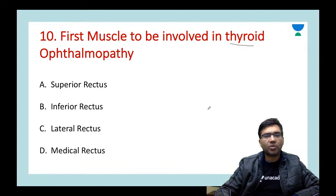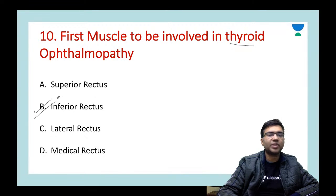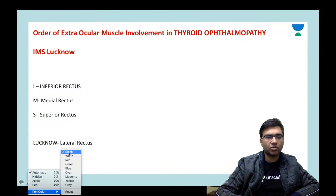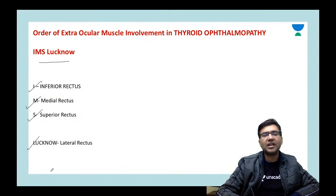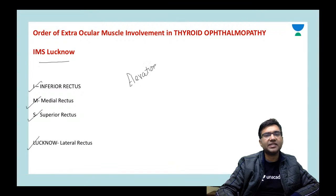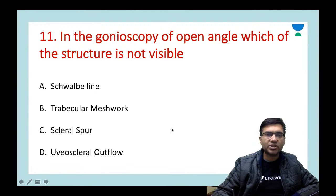Next question: which is the first muscle to be involved in thyroid ophthalmopathy? Options: superior, inferior, lateral, or medial rectus. Remember the rectus muscles are affected first and the first one is inferior rectus. Use the mnemonic 'IMS Lucknow': I = inferior rectus (first), M = medial rectus, S = superior rectus, and the last is lateral rectus. The first action hampered is elevation.